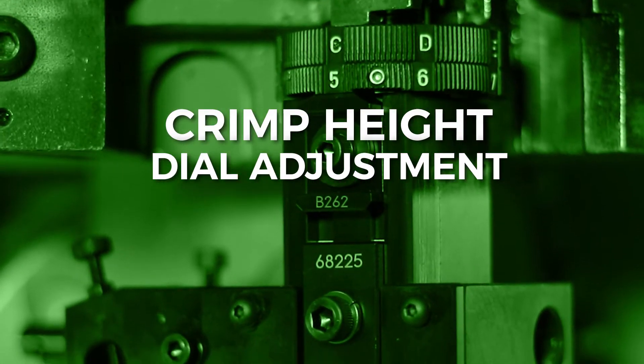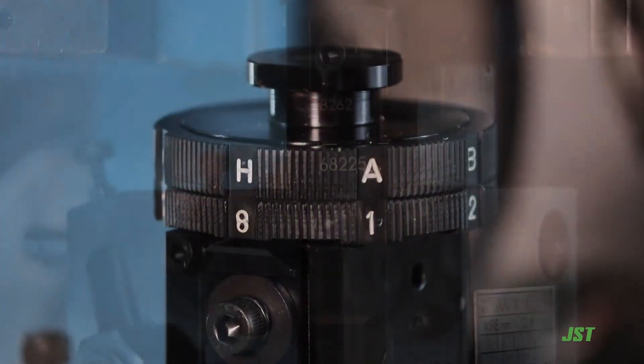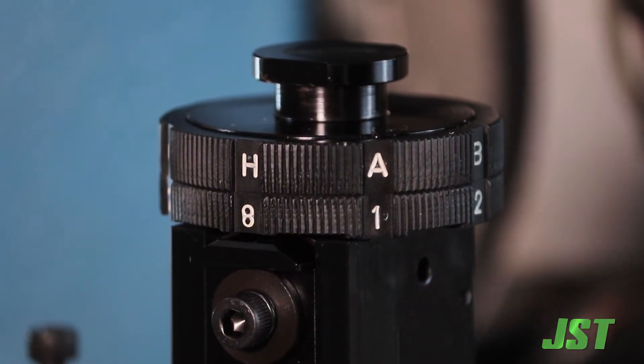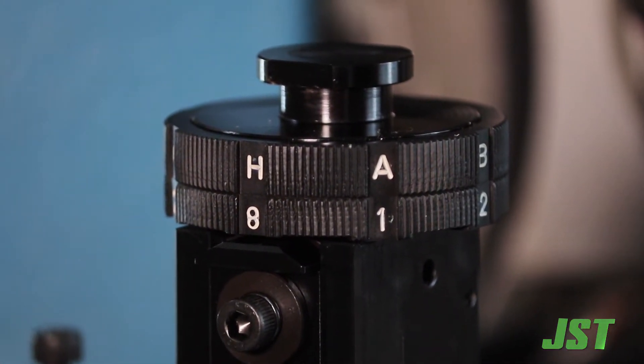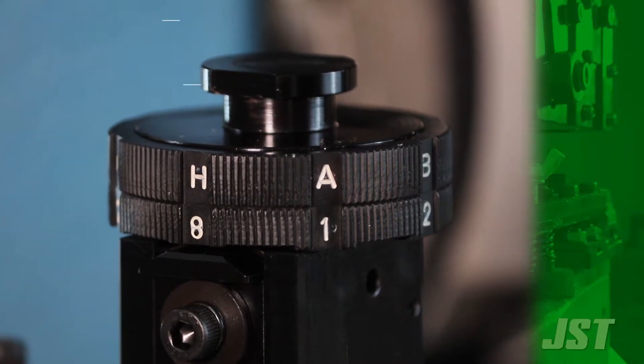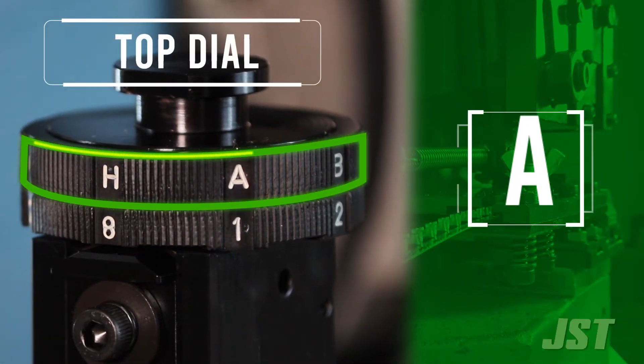Crimp Height Dial Adjustments. There are two dials on the applicator for adjusting the terminal crimp height. The top dial is lettered A to H and adjusts the conductor crimp height.